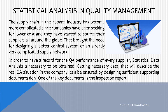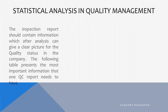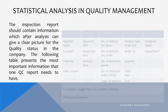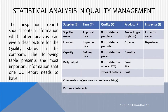One of the key documents is the inspection report. The inspection report should contain information which, after analysis, can give a clear picture of the quality status in the company. The following table presents the most important information that a QC report needs to have.